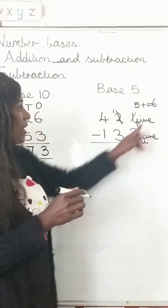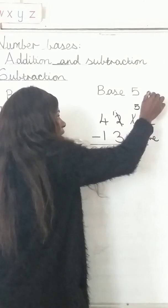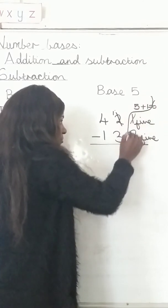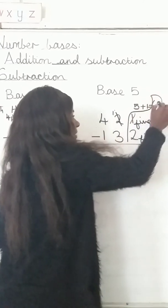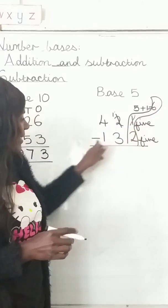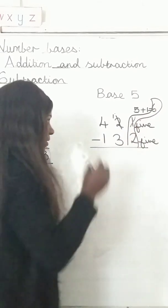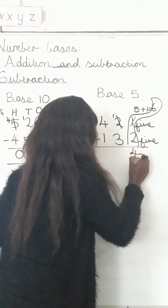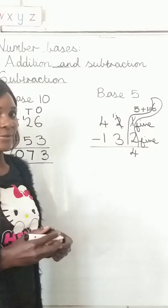Now we subtract: 6 minus 2 gives us 4. Write the 4 there. We remain with 1 in the next column.